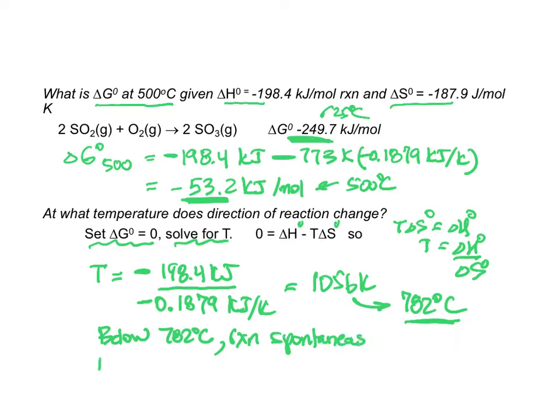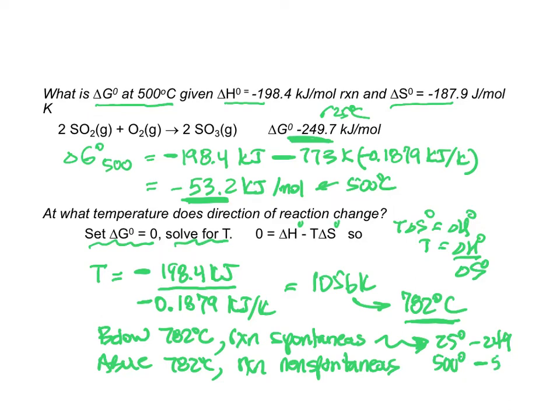If I am above 782 degrees centigrade the reaction is non-spontaneous. So this can be applied to anything and it often is a question on a midterm exam because we want to see can you figure out what temperature spontaneity changes. For the problem we just did we saw at 25 degrees centigrade it was minus 249. At 500 degrees centigrade we saw it was minus 53. So it was really working its way towards the number where spontaneity would actually change.